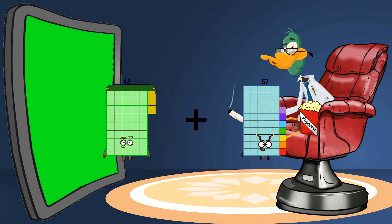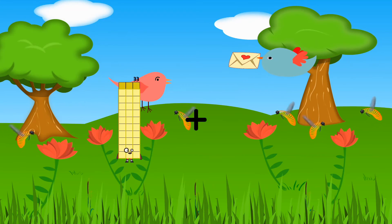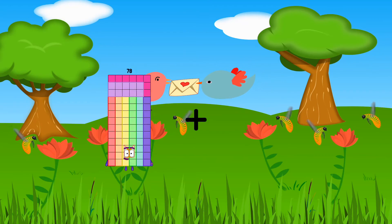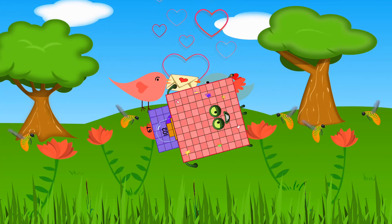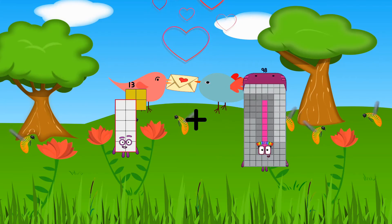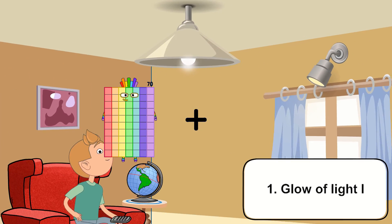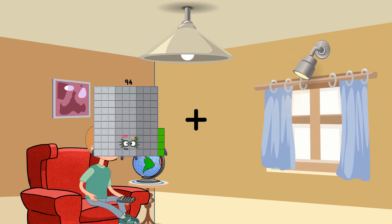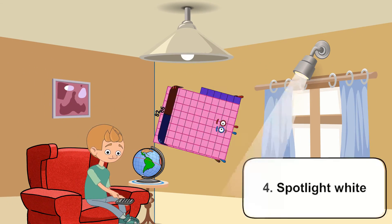43 plus 2 equals 45. 33 plus 54 equals 87. 67 plus 102 equals 159. 13 plus 25 equals 38. 70 plus 75 equals 145. 82 plus 85 equals 158. 33 plus 34 equals 67.